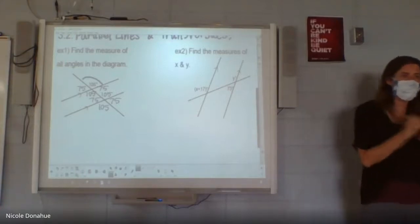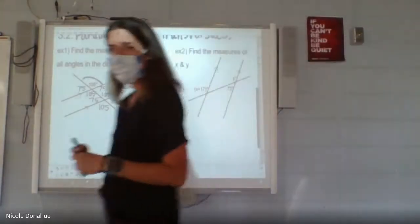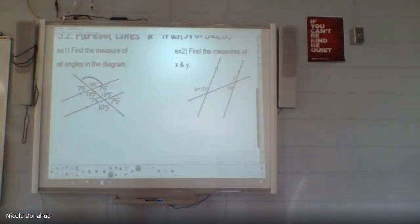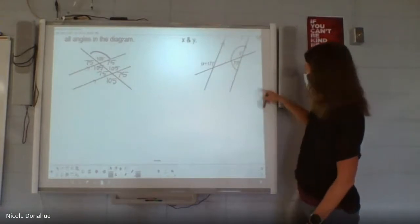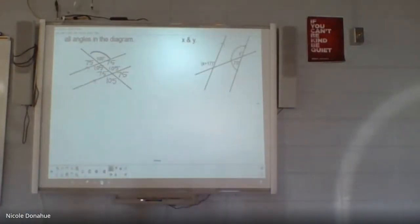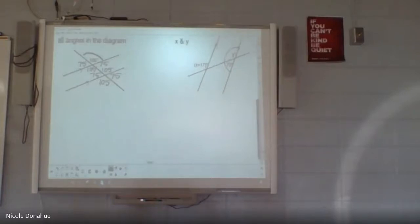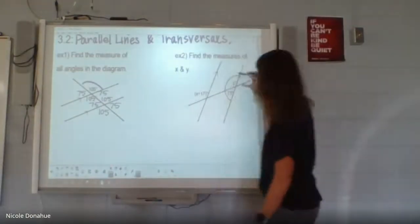Example two asks us to find the measures of x and y. What did you go for first in this one? Let's say there's one that's easier than the other to find first. Example two, what would you guys go for first? I try and find the y. Yeah, I would suggest finding y as well. Because of the fact that those two add to 180. So you can find y because they add to 180 together. And we figure out that y is, what is that, 107? Right.